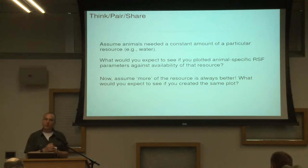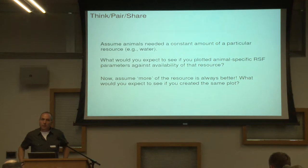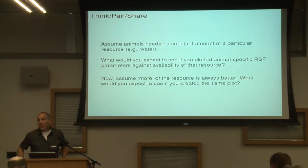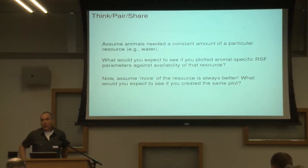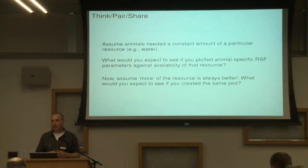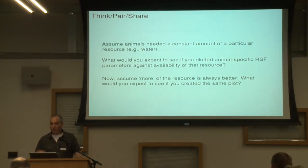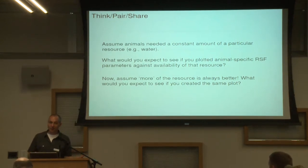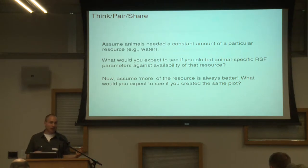Do we have to assume that availability of the resources is the same across individuals? Is it closer to a river than another fisher? Here the idea is maybe you're getting different coefficients, but part of the reason is those fisher live in very different landscapes. Maybe their behavior is actually pretty similar — they're using a constant amount of something, but the coefficients vary considerably because of the landscape they inhabit.